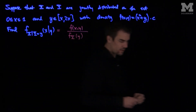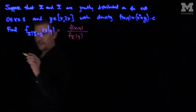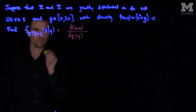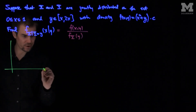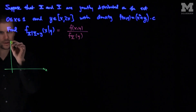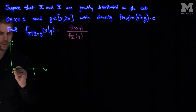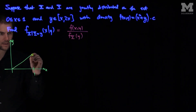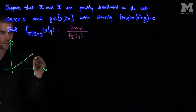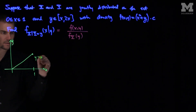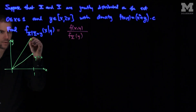So let's find out what this marginal distribution is. To find f_Y(y), we'll plot our region of integration. Here's our region in x and y: x goes between 0 and 1, y goes between x — this is the line y equals x — and y equals 2x.